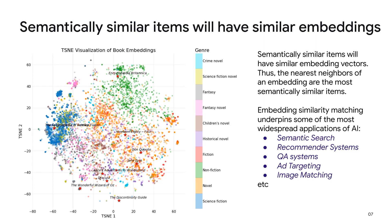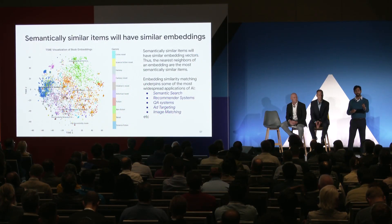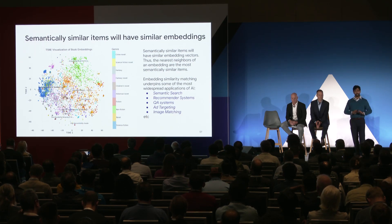Let's look at this example image. We have embeddings created from books — we took the textual content of books, produced embeddings, and projected them onto a two-dimensional space. What we find is that embeddings for books that belong to the same genre typically cluster together. This property of embeddings powers many compelling applications, and I'll pass things over to Fabian to demo one such cool application.